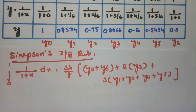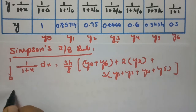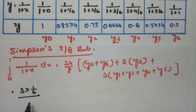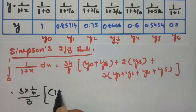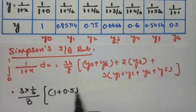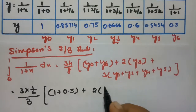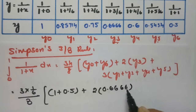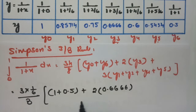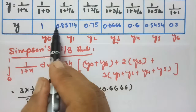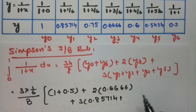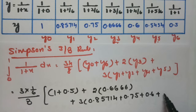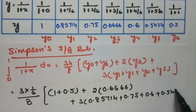Substituting all values: 3h/8 = 3 × (1/6) / 8 = 1/16. Then (y0 + y6) = 1 + 0.5 = 1.5. Then 2 × y3 = 2 × 0.6666. Then 3 × (y1 + y2 + y4 + y5) = 3 × (0.85714 + 0.75 + 0.6 + 0.5454).